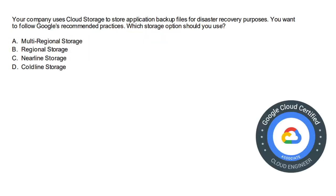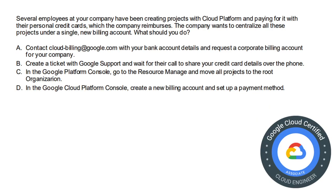Moving on to the next question. Your company uses Cloud Storage to store application backup files for disaster recovery purposes. You want to follow Google's recommended practices. Which storage option should you choose? The four options are: multi-regional storage, regional storage, nearline storage, and coldline storage. The correct answer is option D: coldline storage.